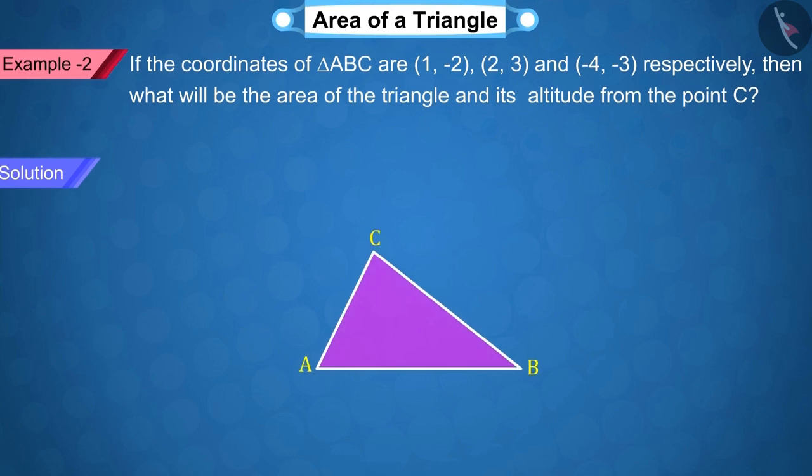To start with, let's draw triangle ABC which looks like this. Where we assume the coordinates of the point A of the triangle as x₁ = 1, y₁ = -2, the coordinates of the point B as x₂ = 2, y₂ = 3 and the coordinates of the point C as x₃ = -4, y₃ = -3.